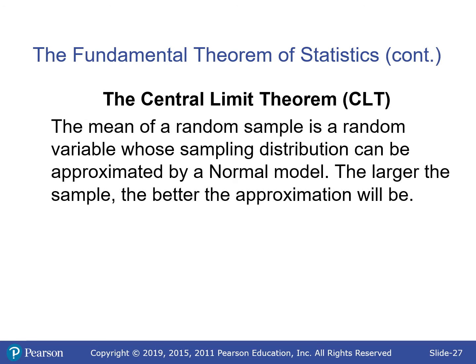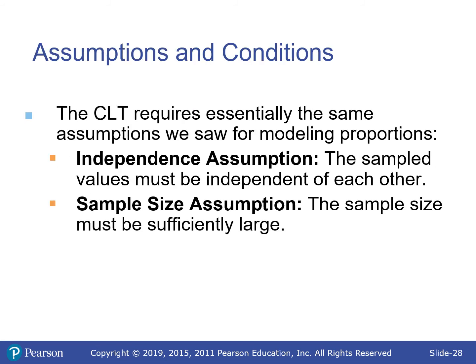The mean of random samples is a random variable whose sampling distribution can be approximated by a normal model — the larger the sample, the better the approximation. Assumptions and conditions: independence (sampled independently and randomly), and sample size must be sufficiently large. What's large enough depends on how normal the population is, but 20 is usually perfectly fine even if the population is completely non-normal.